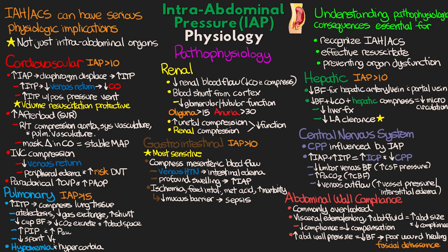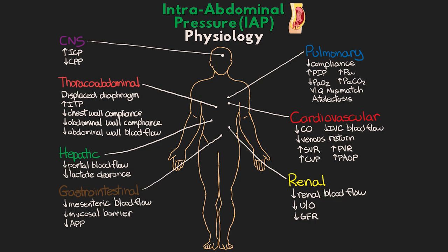The last concept in the physiology section is abdominal perfusion pressure, or APP. If you're familiar with cerebral perfusion pressure, this is very much the same thing applied to abdominal pressure. Abdominal perfusion pressure equals mean arterial pressure minus intra-abdominal pressure, and our goal is an APP greater than 50 to 60. This is a strong predictor for visceral perfusion and an endpoint for resuscitation in these patients. It has also been shown to be a better predictor for mortality than MAP or intra-abdominal pressure alone. Here is a quick summary slide of all the physiologic changes we just discussed.